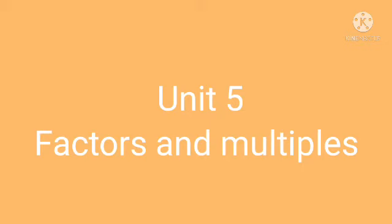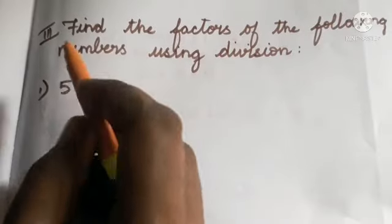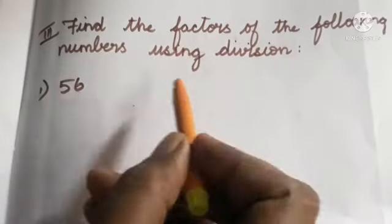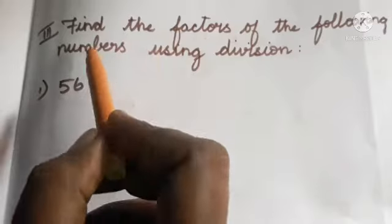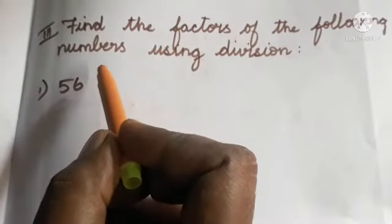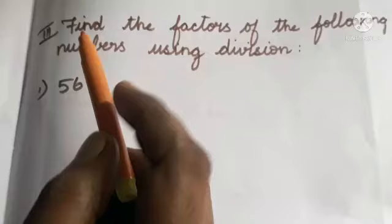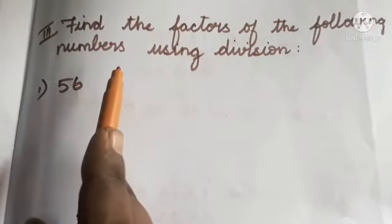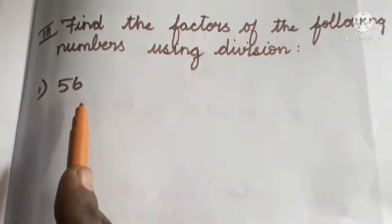Today we are going to see how to find the factors of a given number using division. In the previous class we discussed how to find factors using multiplication. Today, Roman numeral 3: find the factors of the following numbers using division. A factor of a number divides the number completely without a remainder, so we are going to divide the numbers to find out the factors.